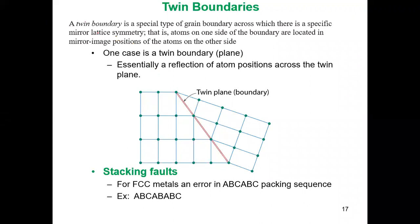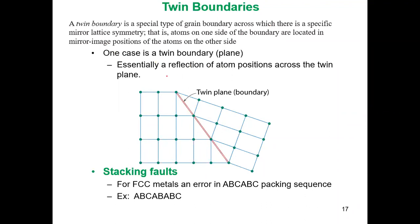A twin boundary is a special type of grain boundary. There is a specific mirror lattice symmetry — atoms on one side of the boundary are located in mirror image positions of the atoms on the other side. It is a reflection of the atoms across the twin plane.